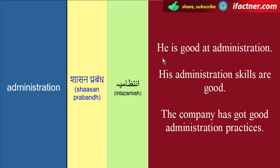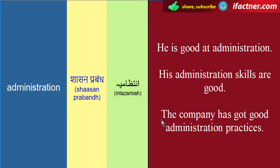Yahaaan hamare paas teen example sentences hain. Pehla: 'He is good at administration' — woh shasan prabhand mein achha hai, yaani woh intizaam kerne mein achha hai. Doosra: 'His administration skills are good' — us ki intizaamia ki skills achhi hain. Teesra: 'The company has got good administration practices' — company ke paas achhi administration practices hain, yaani woh achhi tarikay say intizaam kertay hain.